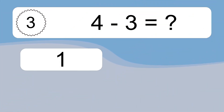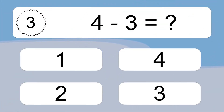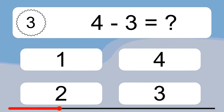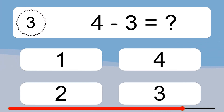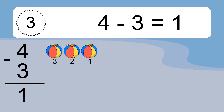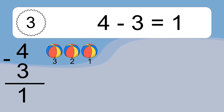4 minus 3 equals what? 4 minus 3 equals 1. Let's count it: 3, 2, 1.